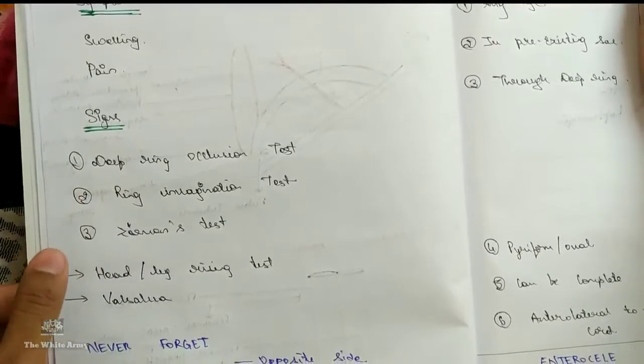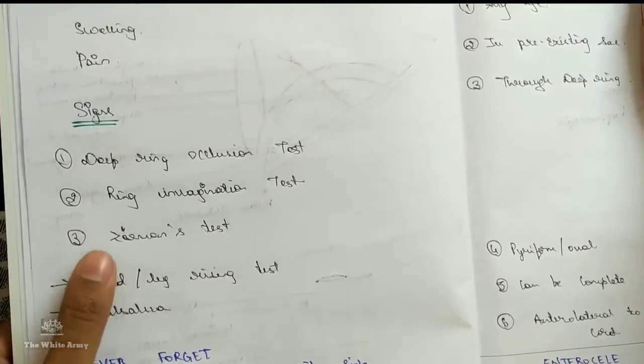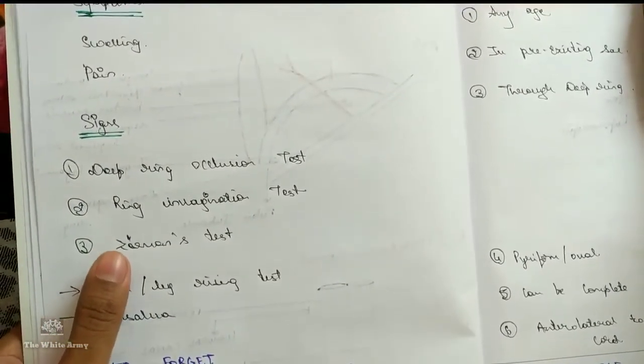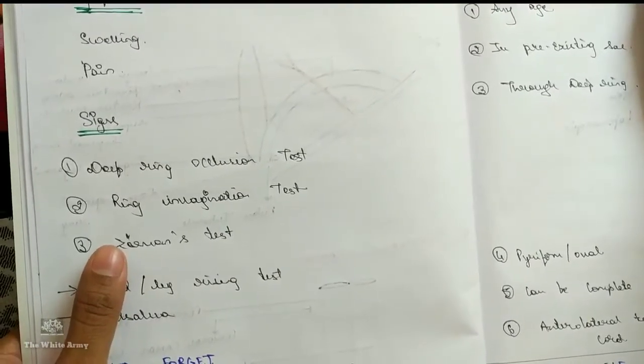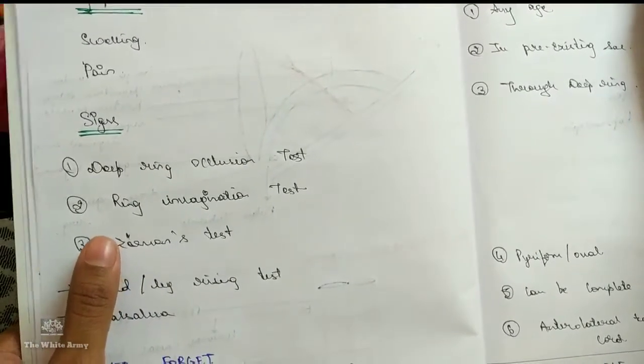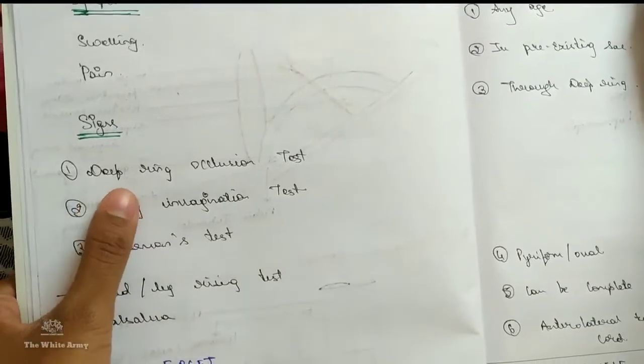Deep ring occlusion test. You are going to occlude the deep ring using your thumb and ask the patient to cough after reducing the contents. If you feel the impulse on thumb, it means it is indirect hernia.